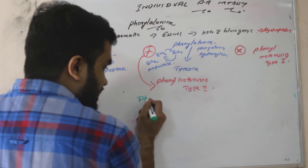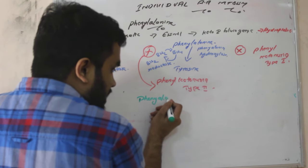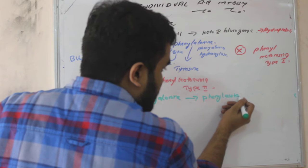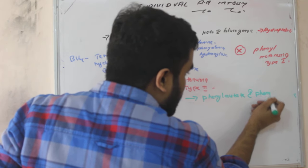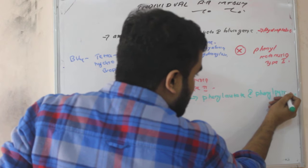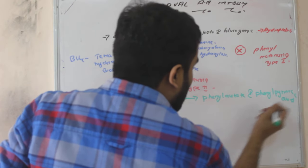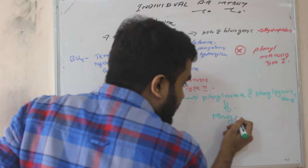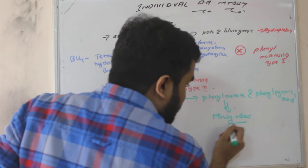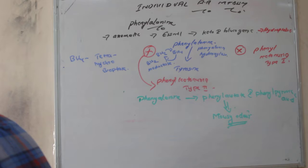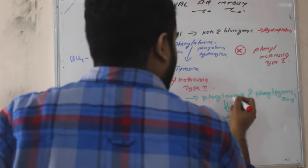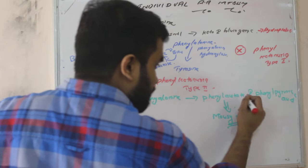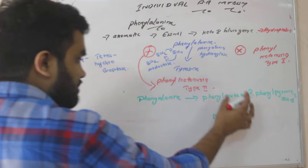Now if this enzyme is absent, this phenylalanine will accumulate. This phenylalanine accumulation, they will be converted to phenylacetyl and phenylpyruvic acid.